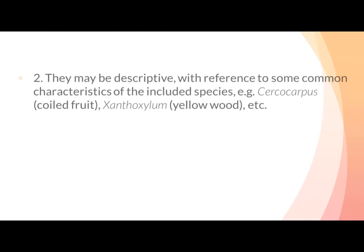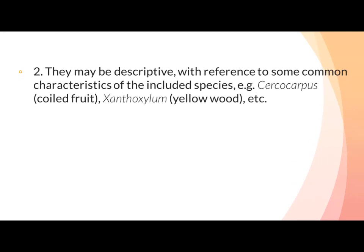Second, generic names may be descriptive with reference to some common characteristics of the included species. For example, Cercocarpus means 'curled fruits' and Xanthoxylum means 'yellow wood.' یہ generic name کسی خاص characteristic کی بنیاد پر بھی دے سکتے ہیں جو کہ صرف اس genus کے species میں موجود ہو۔